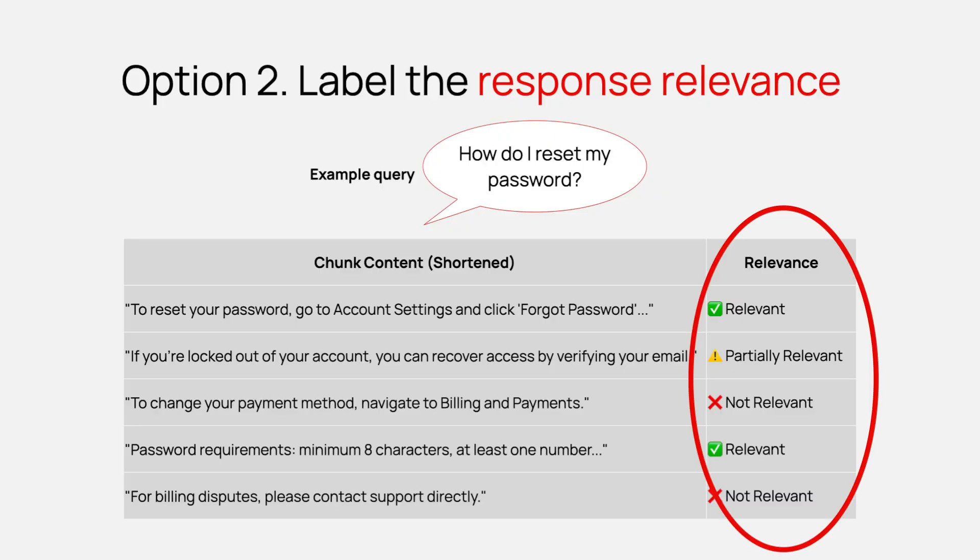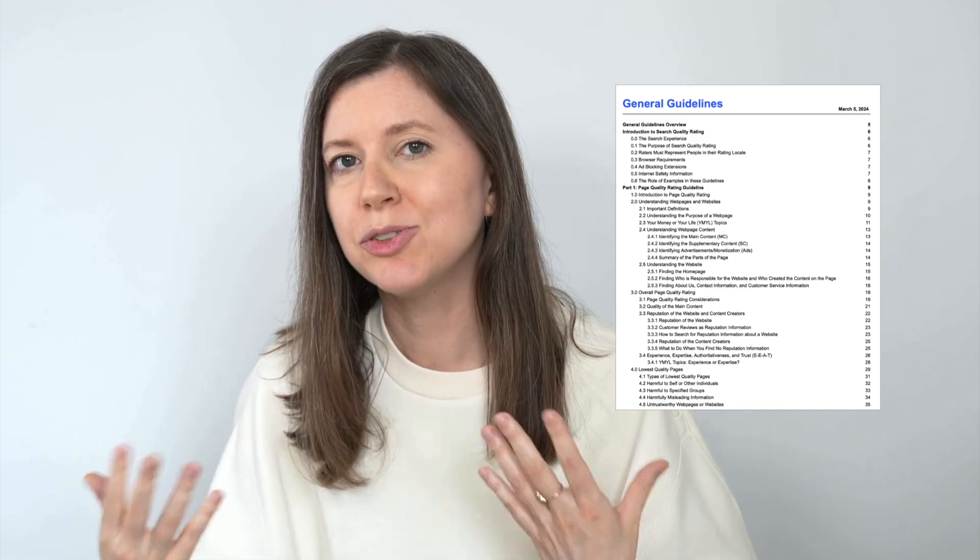So another approach is manual labeling. Instead of preparing the dataset up front, you can just evaluate the results you get. This is what many companies do — even Google. They have serious rater guidelines, over 150 pages long, that explain to human raters how to evaluate search results. Similarly, you could look at every retrieved chunk for a given query and give it a label like relevant, not relevant, or partially relevant, and then aggregate results across multiple queries. However, this is manual, so you need to spend some time actually doing this review.